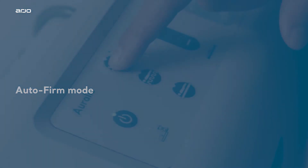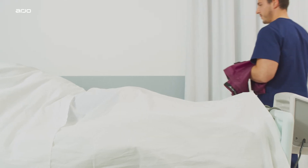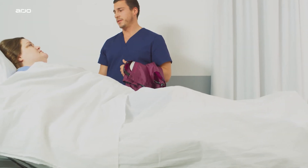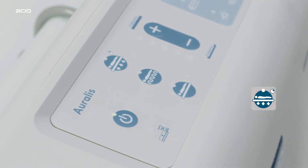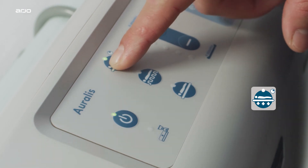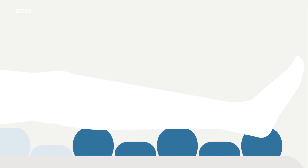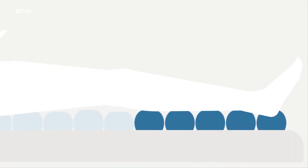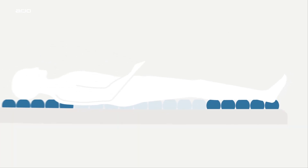AutoFirm Mode. AutoFirm maximizes the air in the cells of the Oralis to provide a temporary stable surface to assist with patient transfer and other nursing procedures. To activate the AutoFirm Mode, hold the AutoFirm button down on the pump for two seconds. Once pressed, AutoFirm Mode remains in operation for 15 minutes, but this can be increased in five-minute steps up to a maximum of 30 minutes.